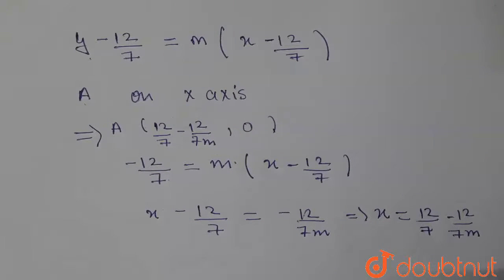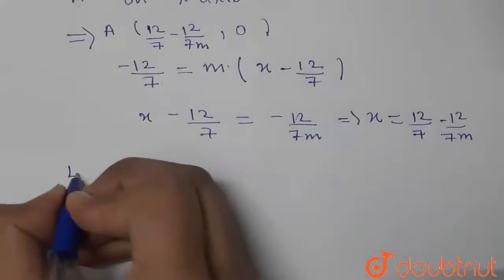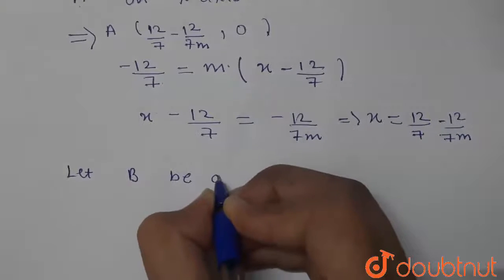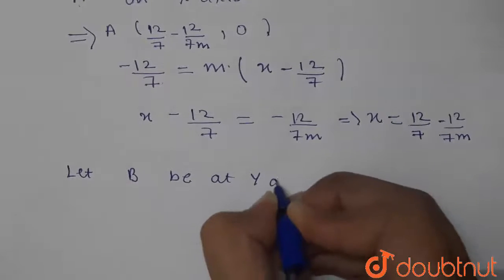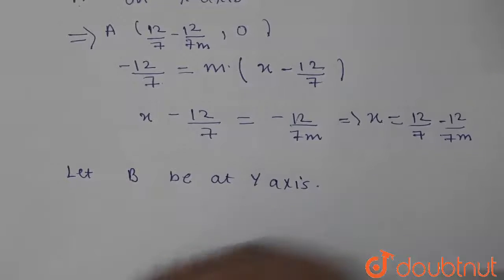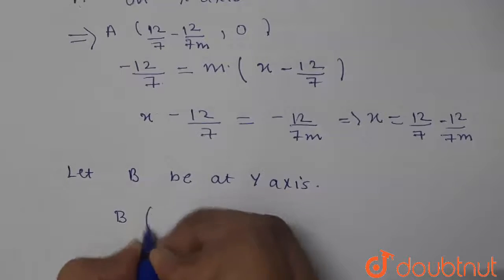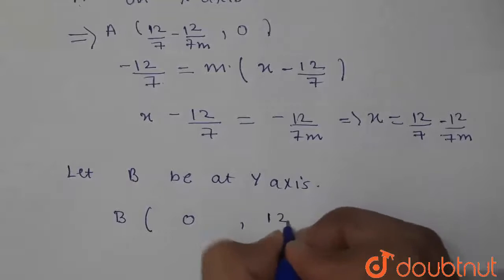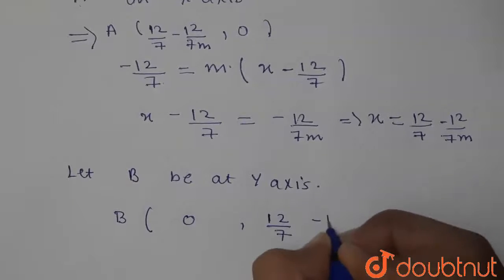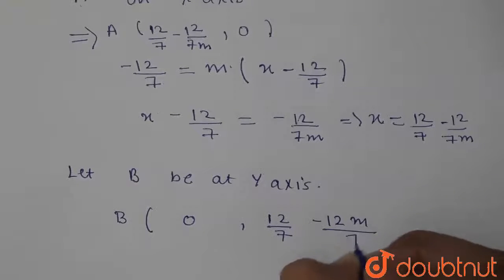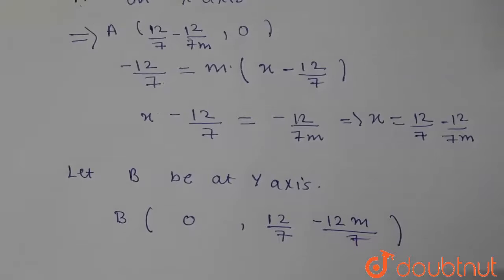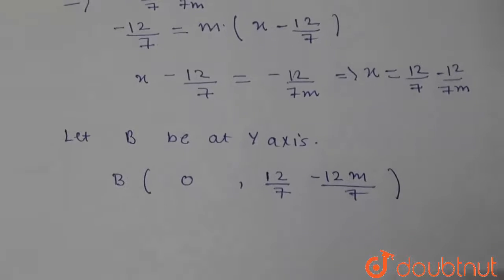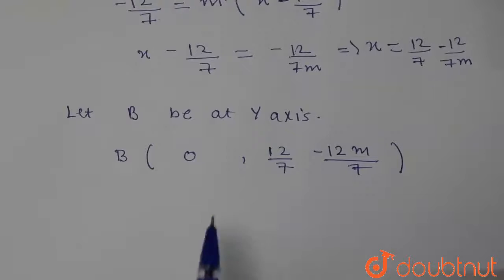Similarly, to find point B on the y-axis, we set x = 0. The y-coordinate comes out as 12/7 − 12m/7. So point B is (0, 12/7 − 12m/7). We now need to find the locus of the midpoint of A and B.